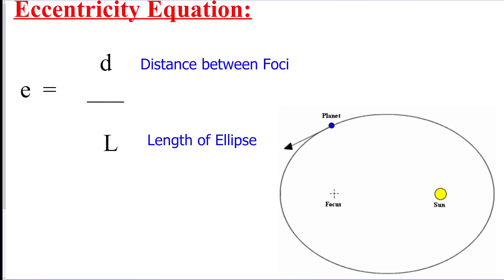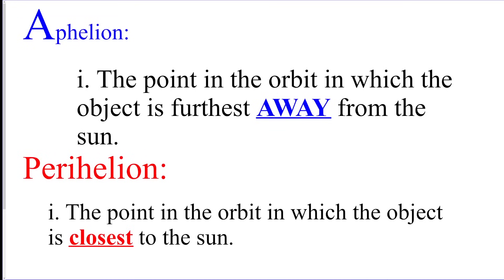Here's the formula to solve for eccentricity. It's on the reference table, so you don't have to remember that. Distance between the focus points is here, and the L value is from here to here, the diameter of the whole orbit.